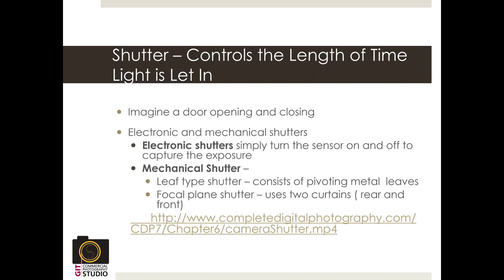The shutter is another camera control that affects how much light comes in. Instead of a variable opening, it's a curtain that sits in front of your sensor — it's either open or shut. The duration the shutter is open controls how long light comes in. Whereas the aperture controls how much light comes in at any given time, the shutter controls the duration. Together, aperture and shutter give you fine control over how much light reaches the sensor. I'll post a video in Slack that shows exactly how a camera shutter works.